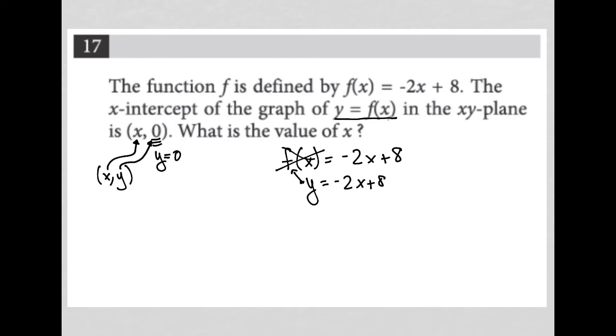So when I combine this information, and I know that I want y to equal 0, I can replace y with 0. So this becomes 0 equals negative 2x plus 8. I subtract 8 from both sides in route to solving for my x-intercept. So negative 8 equals negative 2x.